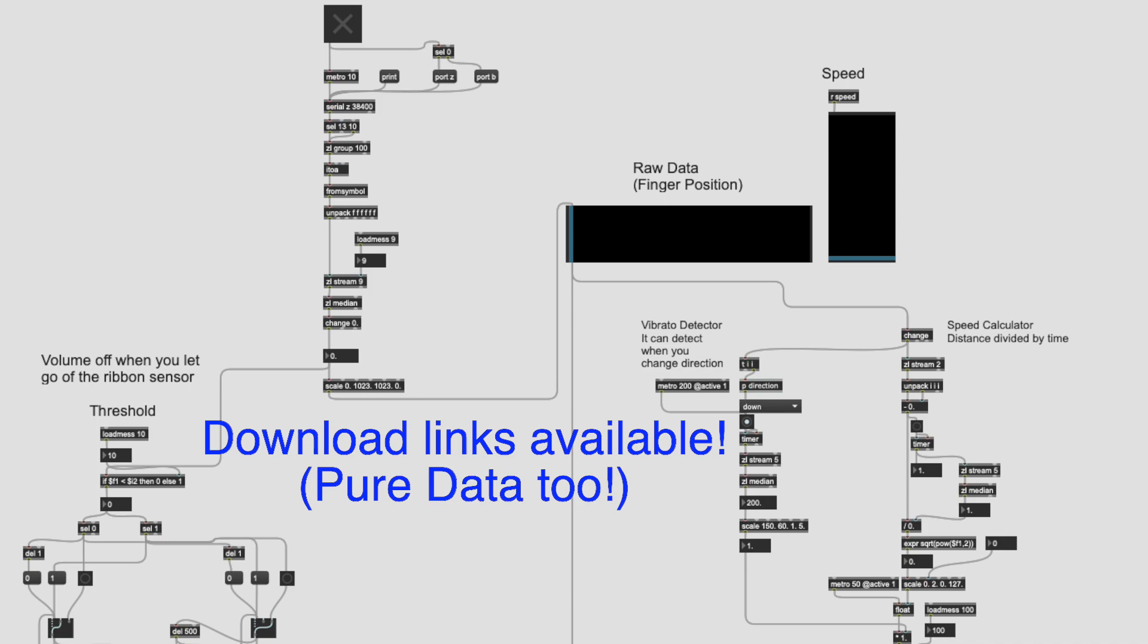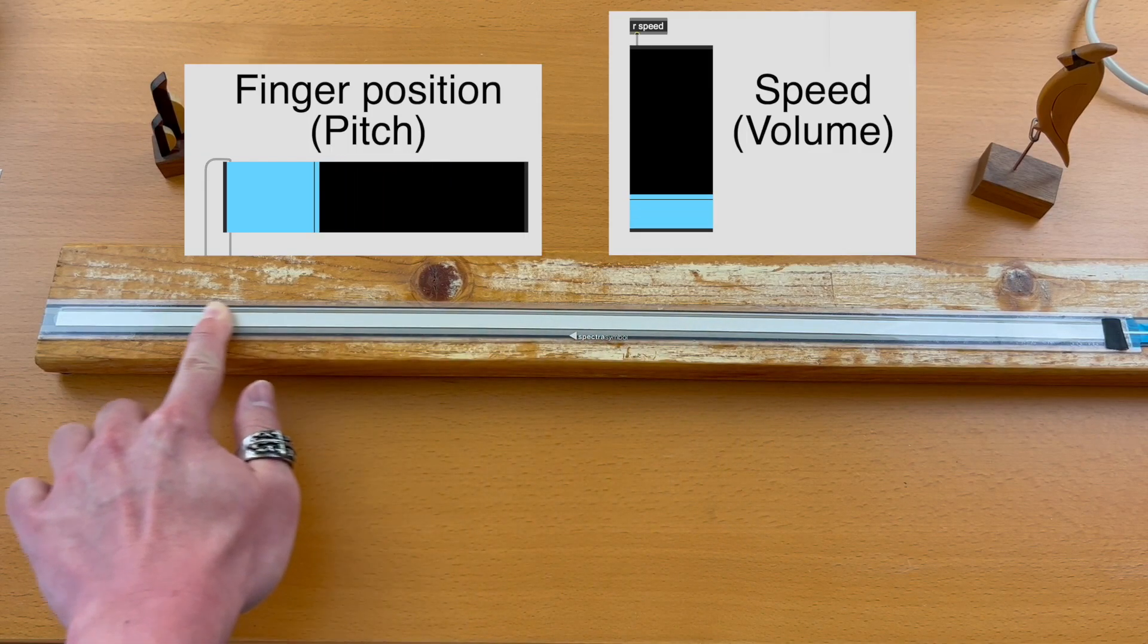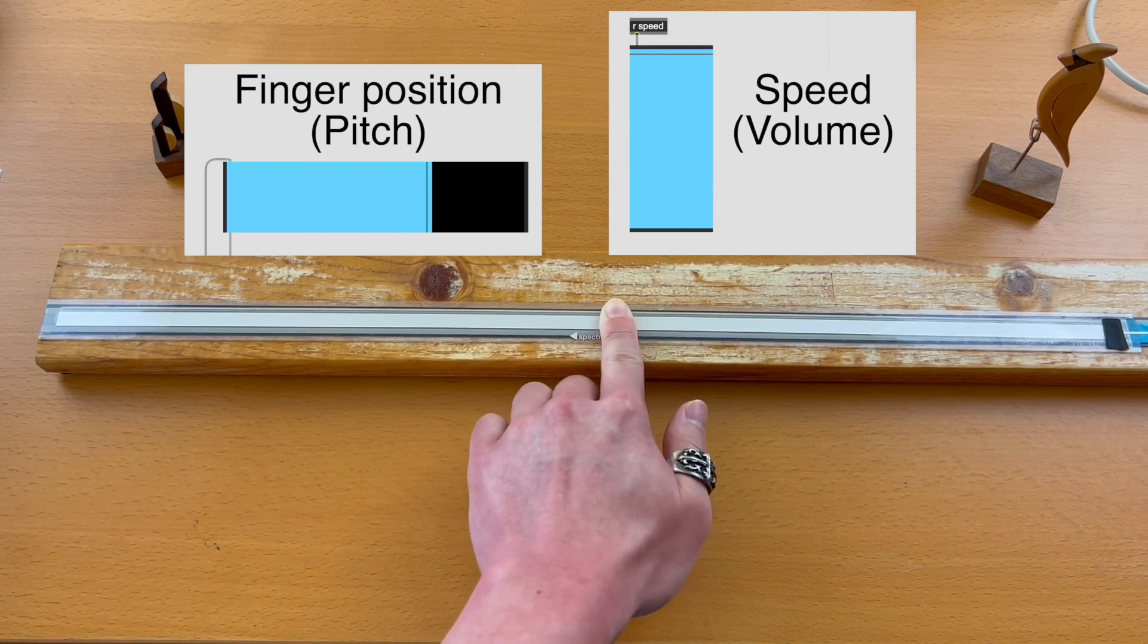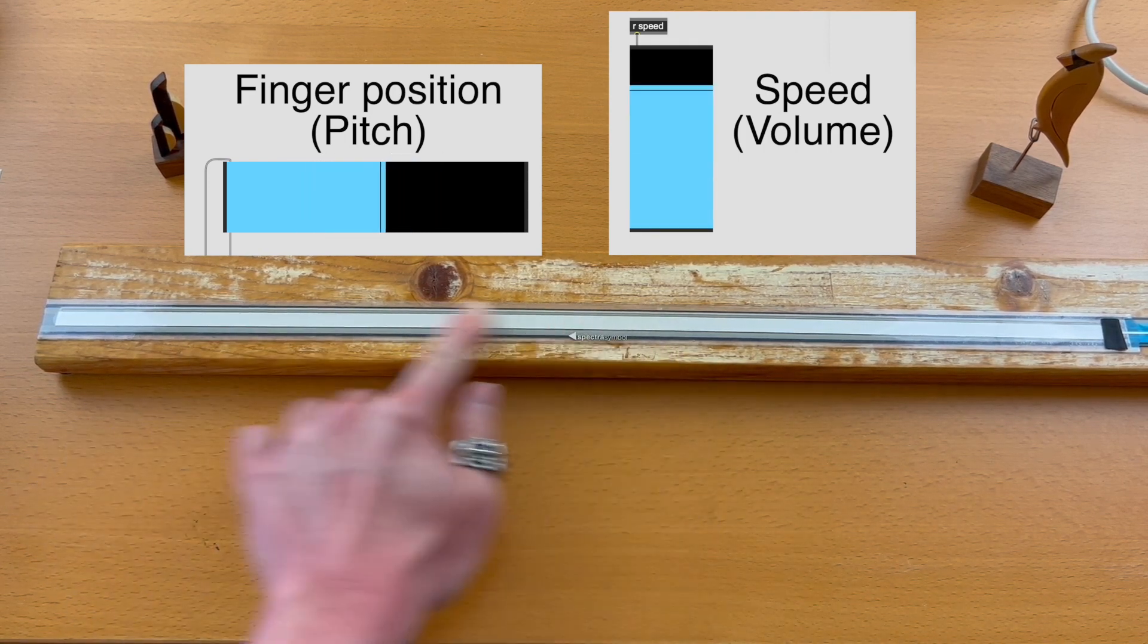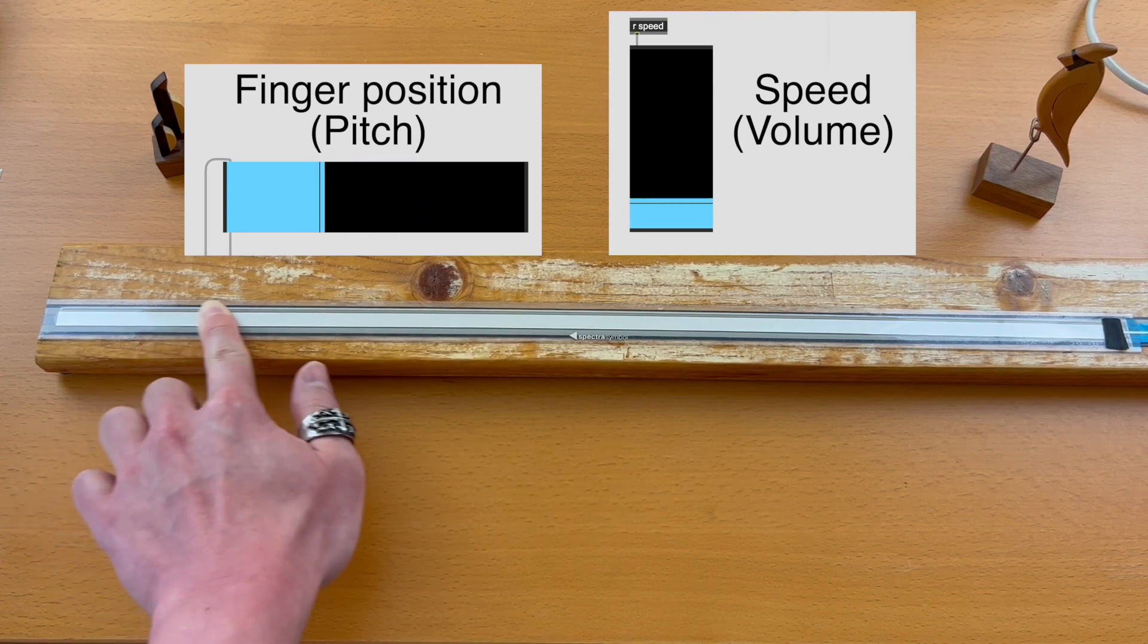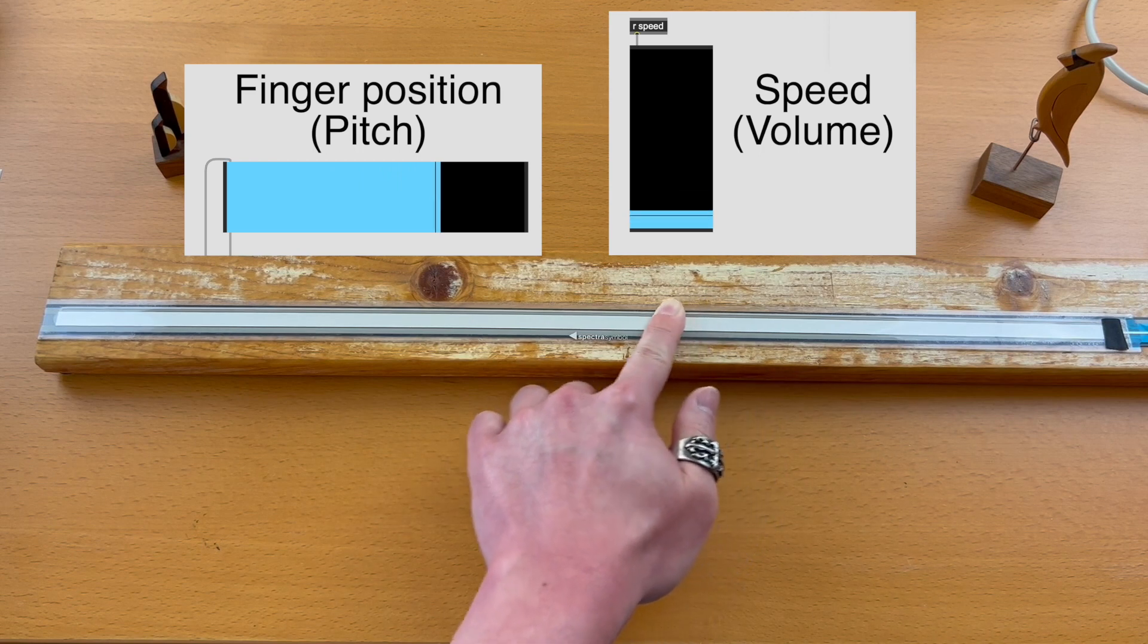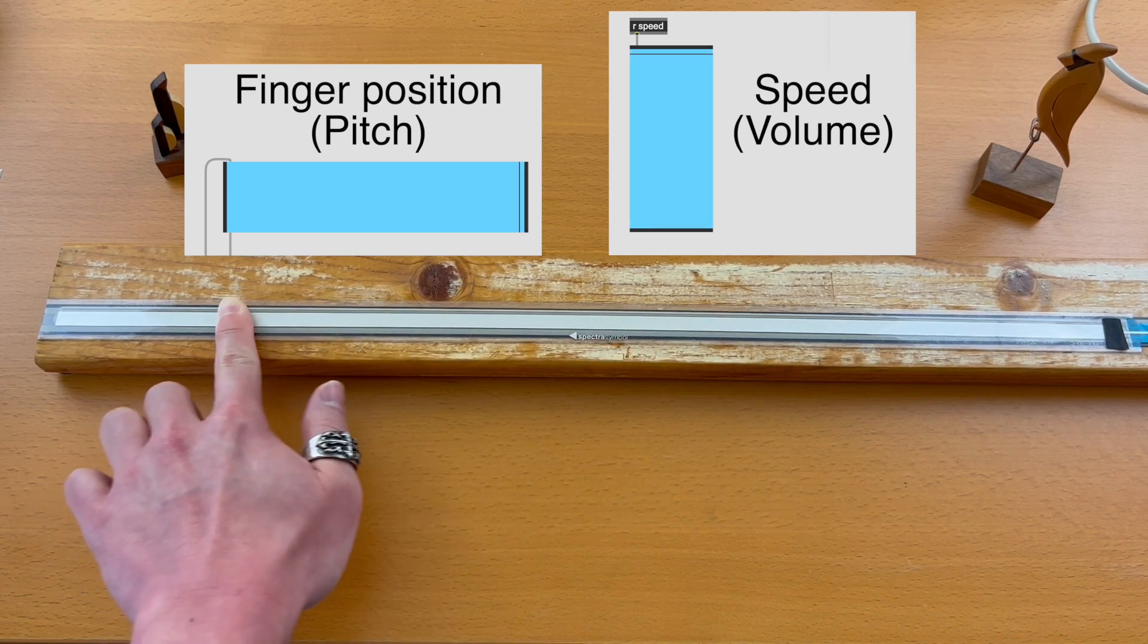Here's a Max patch that calculates the speed of a finger movement. As we can see, this slider increases when the finger movement is fast and vice versa. Alright, let's map it to the volume parameter.